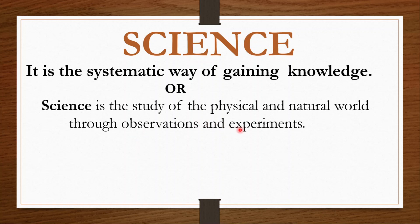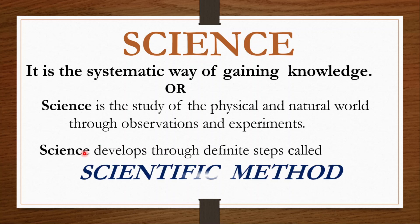Science — that is nothing but in nature, around us, numerous number of processes or reactions are taking place. We are understanding them through our observations and experiments. If you are understanding any process with observation and experiment, then that method of study is called as science. Next, to develop science, there are a definite number of steps — that step is nothing but the scientific method. Science develops through definite steps and those definite steps are called as scientific method.